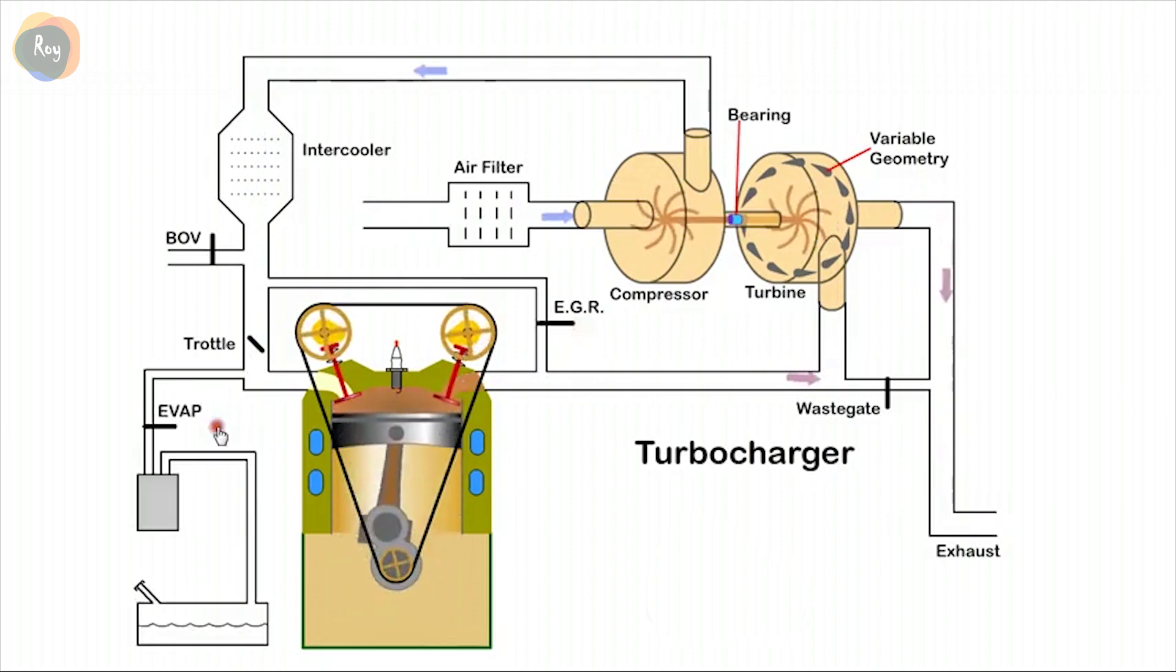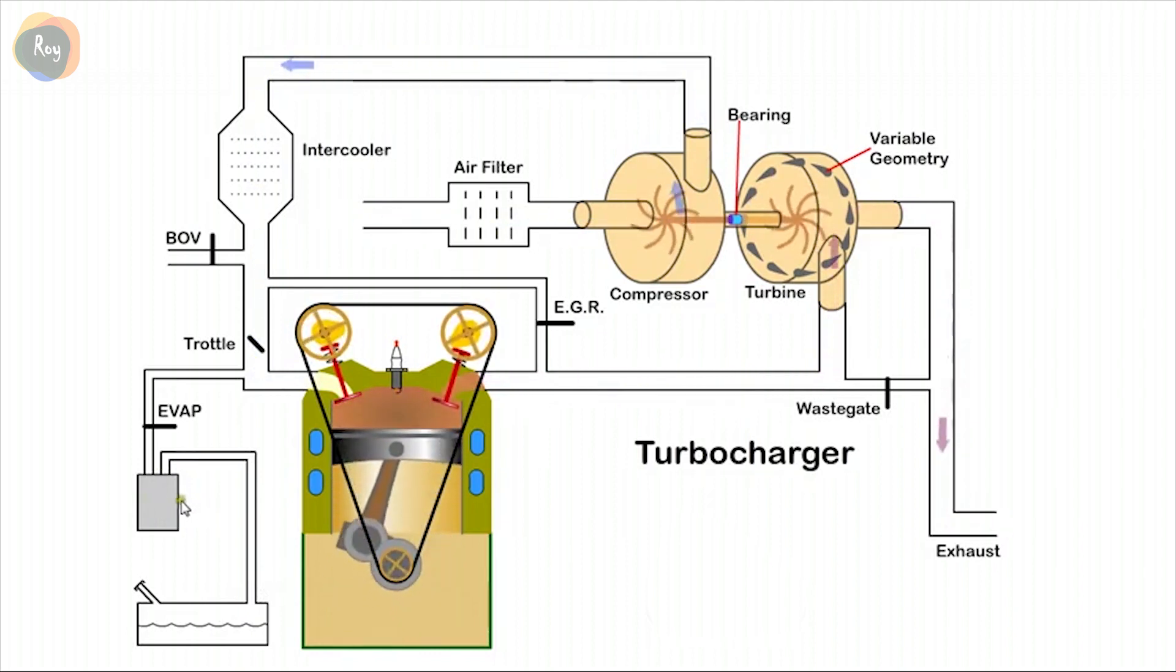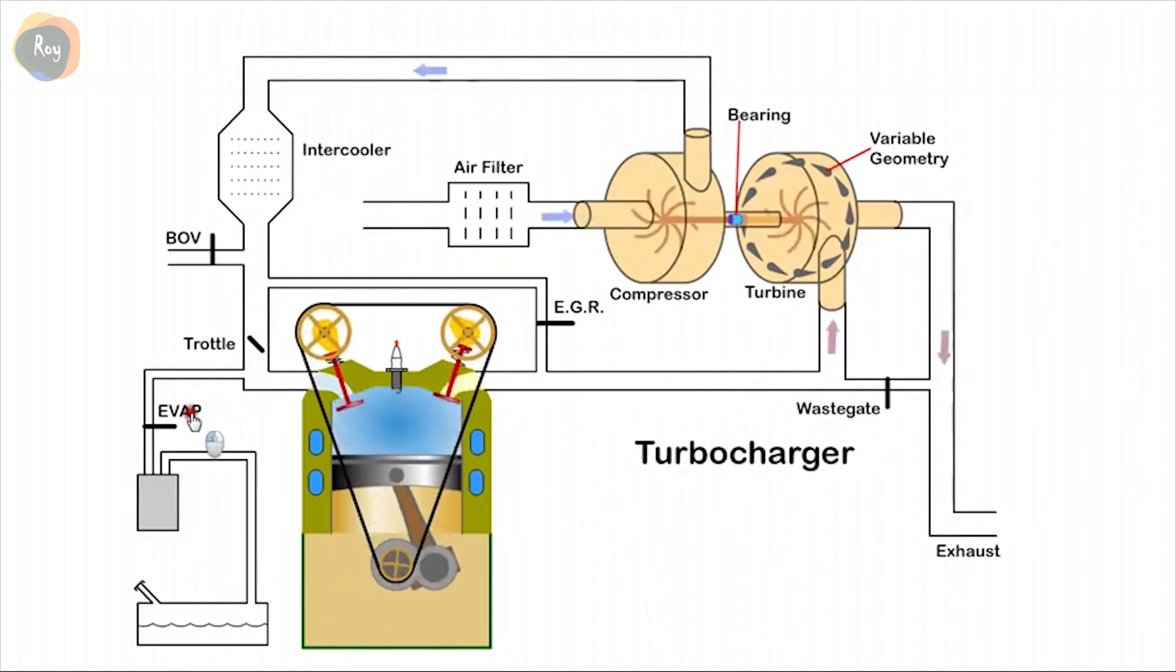When fuel is stored in the fuel tank, it will emit a vapor. To comply with emissions standards, this vapor is not discharged to atmosphere. When the engine is not running, the vapor is collected in a charcoal canister called the EVAP, Evaporative Emission Control System. When the engine is running, the EVAP valve is opened and the vapor is drawn into the engine and burned.